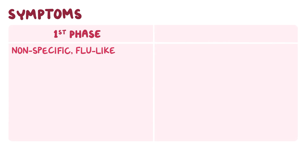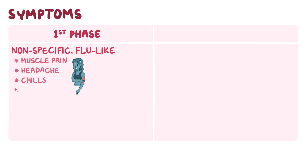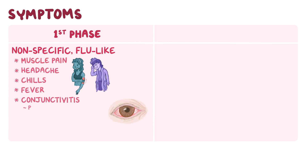Symptoms of leptospirosis depend on the phase of the infection. In the first phase, there are nonspecific, flu-like symptoms like muscle pain, headache, chills, and fever. With conjunctivitis, there may be photophobia and conjunctival suffusions, which is when the eyes gradually become red, but there is no tearing or discharge.